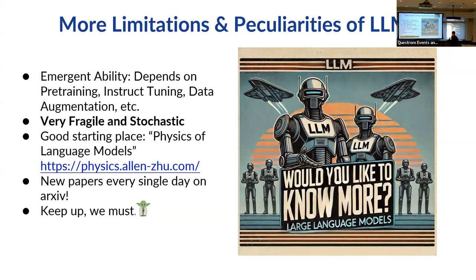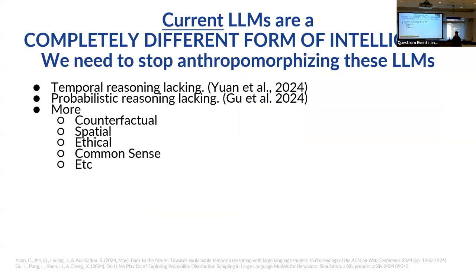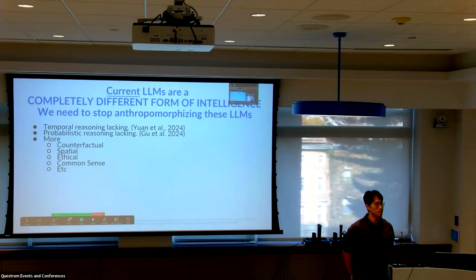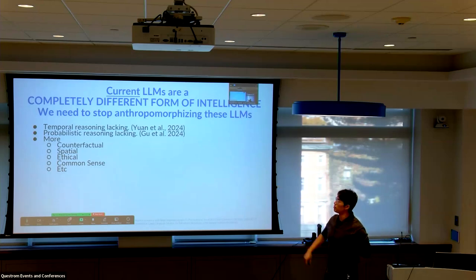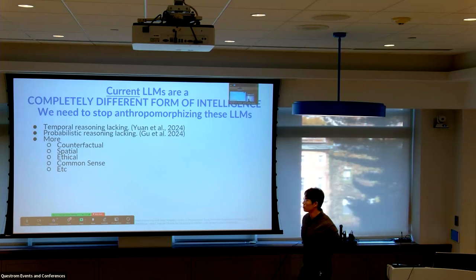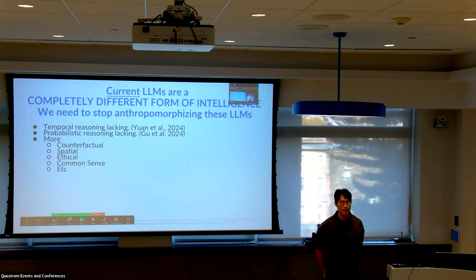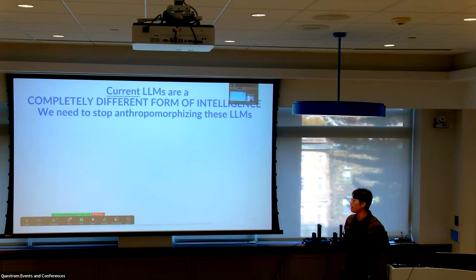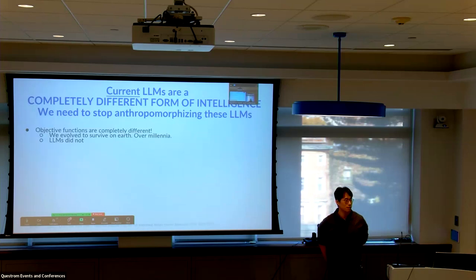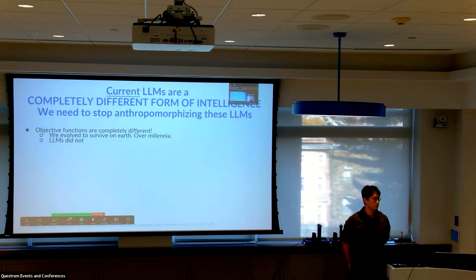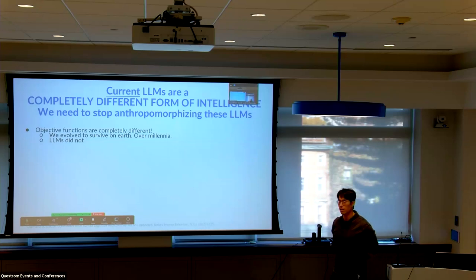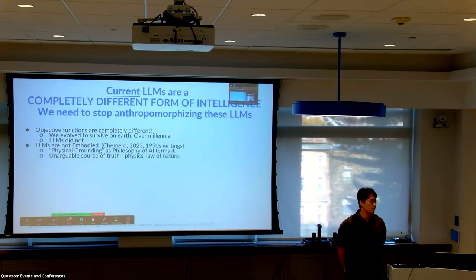If you want to read more about this, I recommend the 'Physics of Language Models' series of papers. The one message I want to impart is that LLMs are a very different form of intelligence — it is intelligence, but it's not human intelligence. Many forms of reasoning are lacking: temporal, probabilistic, counterfactual, spatial, ethical, common sense. This is expected because our objective functions are completely different: we evolved to survive and reproduce over millennia; LLMs did not.